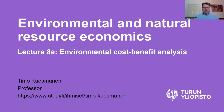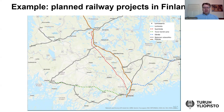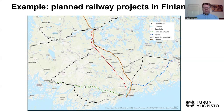Let me first start with an illustrative example. Currently here in Finland there is a lot of debate about planned railway projects, which are illustrated on the map here. Helsinki, the capital of Finland, is at the bottom of the map. There have been at least three major railroad projects in the planning stage: the green rail line would be a faster railway connection to Turku, the red one goes north towards Tampere, and the blue one would be a connection towards eastern Finland towards Kouvola.